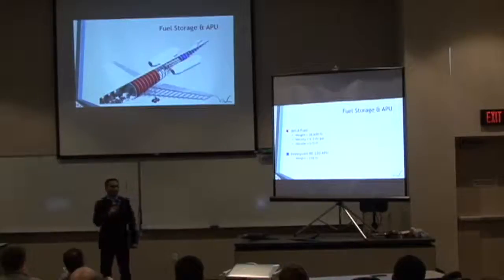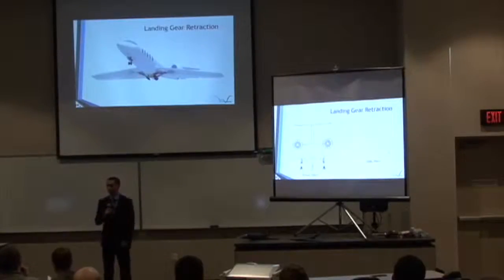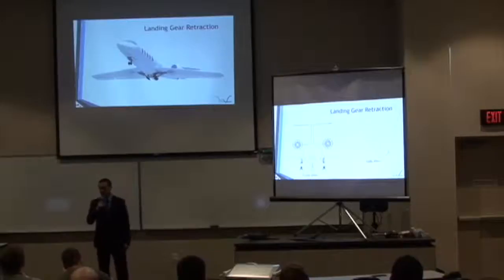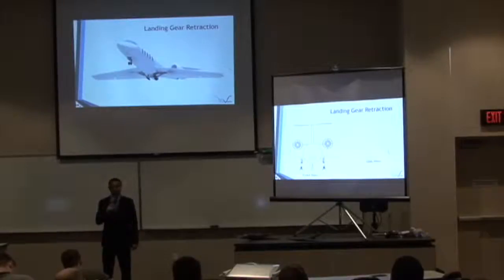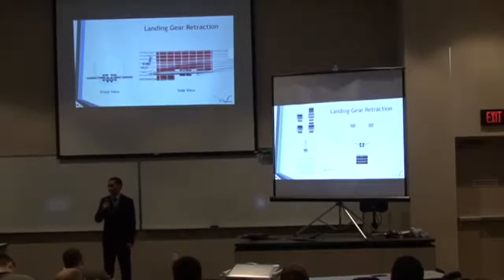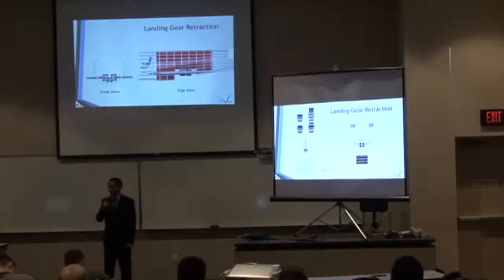It was determined through weight and balance that 1-5 requires 28,600 pounds of fuel to meet range requirements, converted to 570 cubic feet, represented by red on the primary screen. 1-5 incorporates the Honeywell RE-220 APU weighing 238 pounds, represented by blue on the primary screen. The landing gear retracts into the fuselage: the nose gear retracts forward, while the main gear retracts inward into the fuselage while also pivoting forward due to the fuselage tapering upward toward the rear. The front and side views show the landing gear fully retracted, and the secondary screen shows the top view of the fuselage with gear retracted.